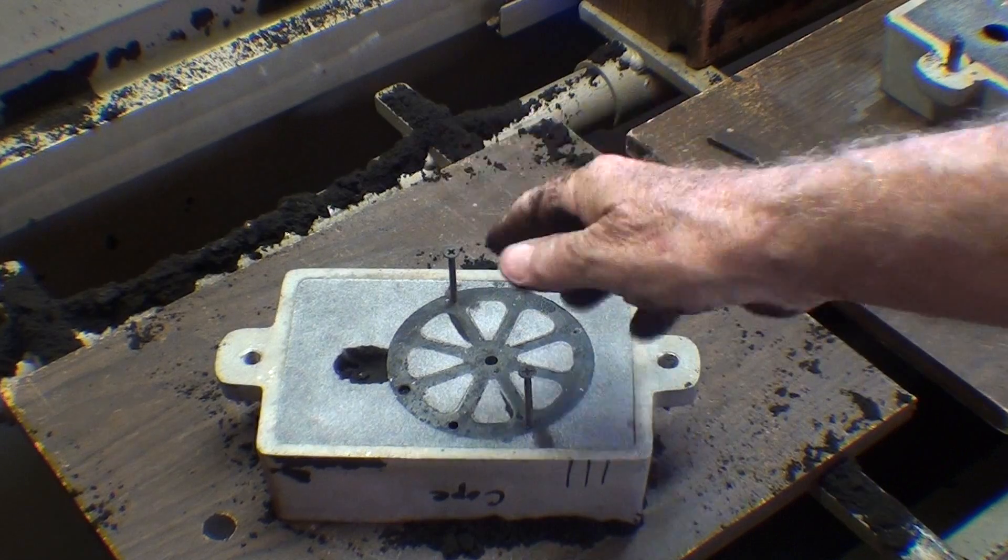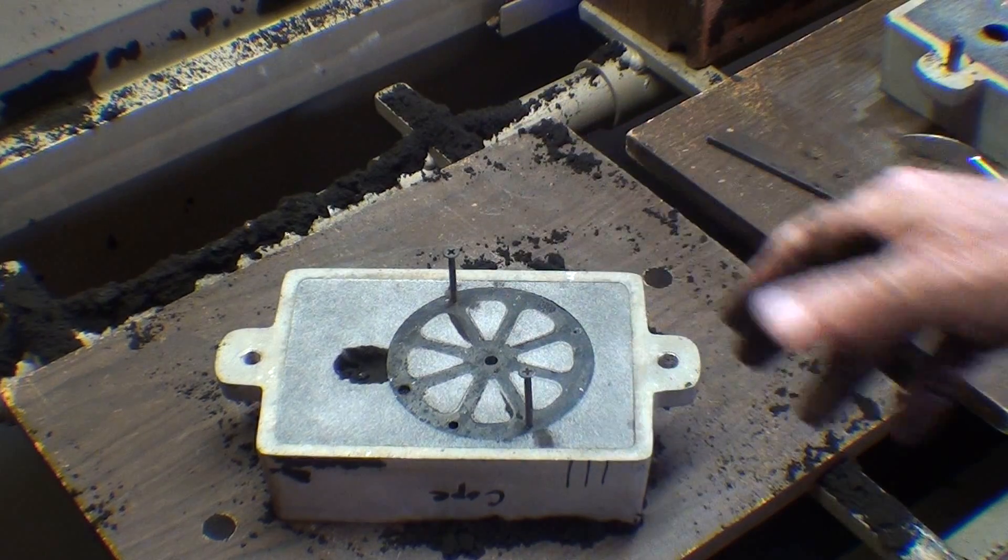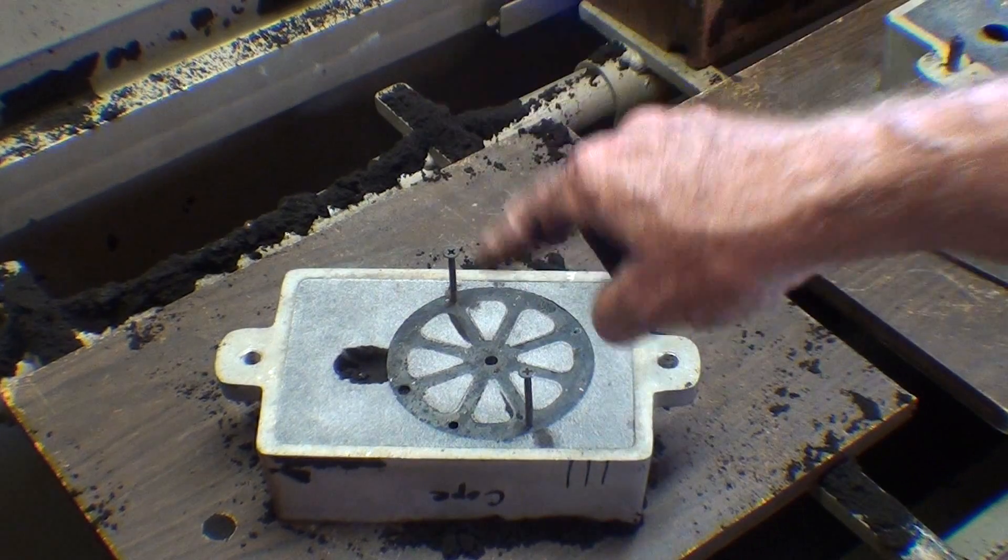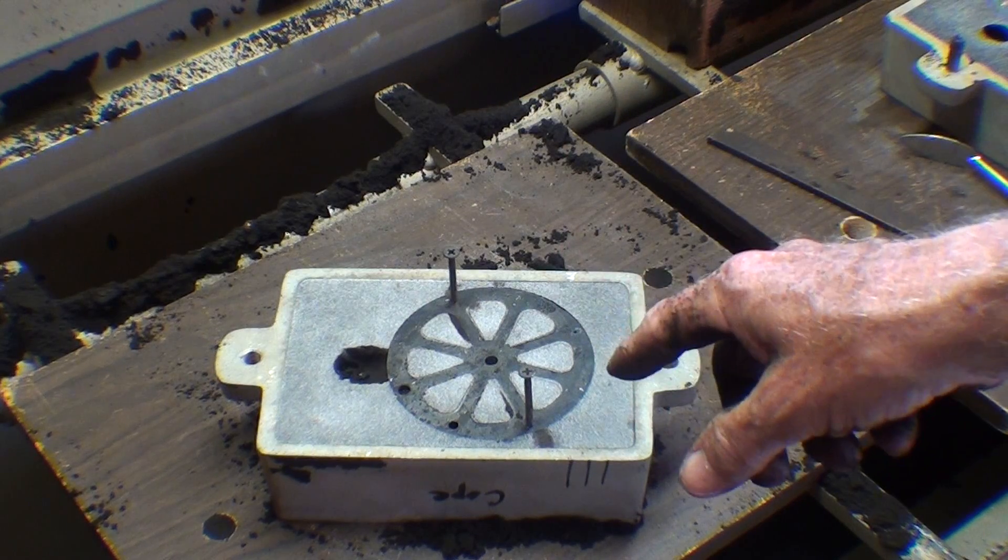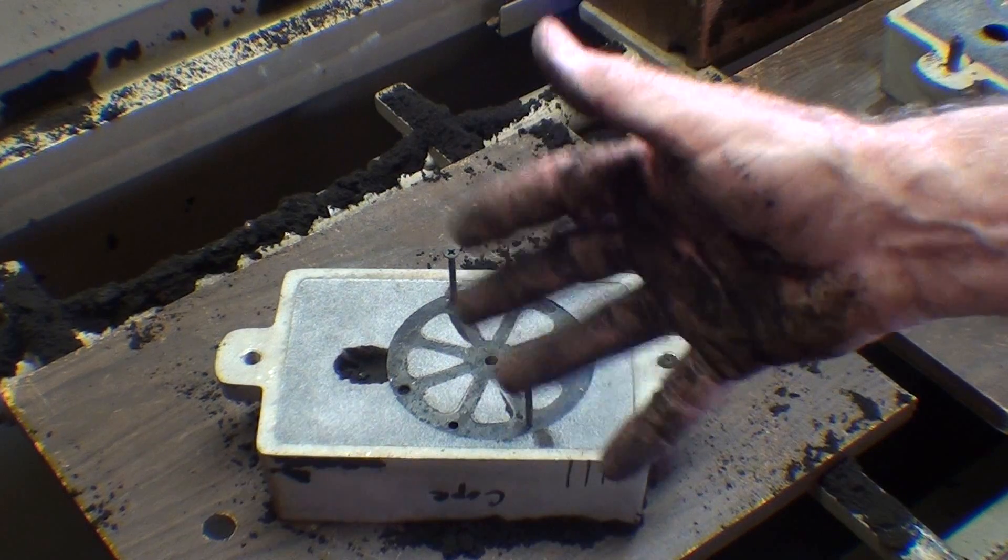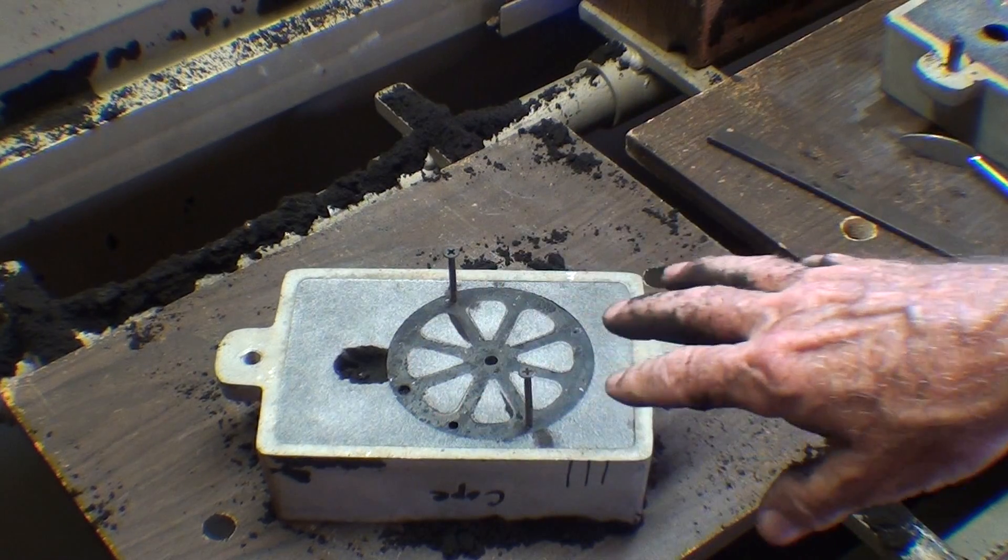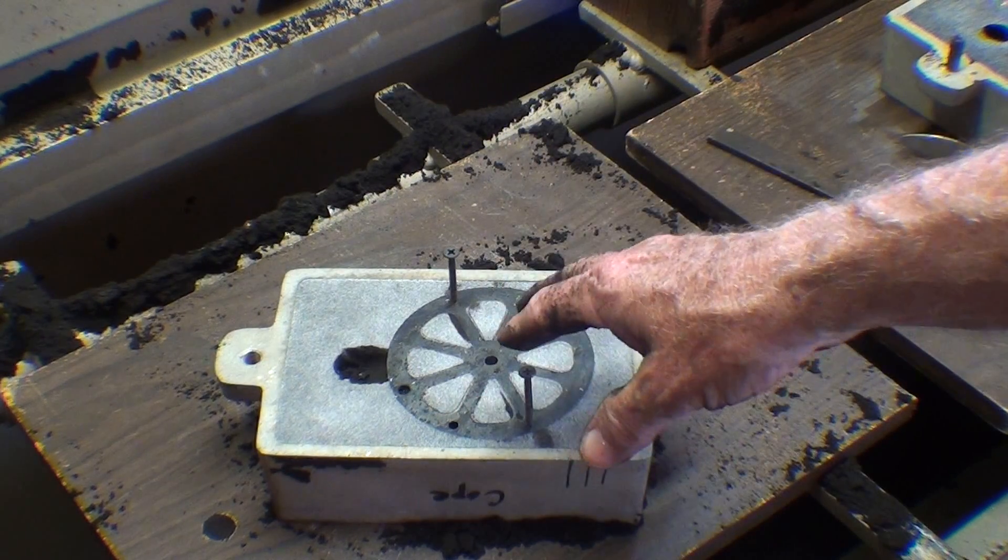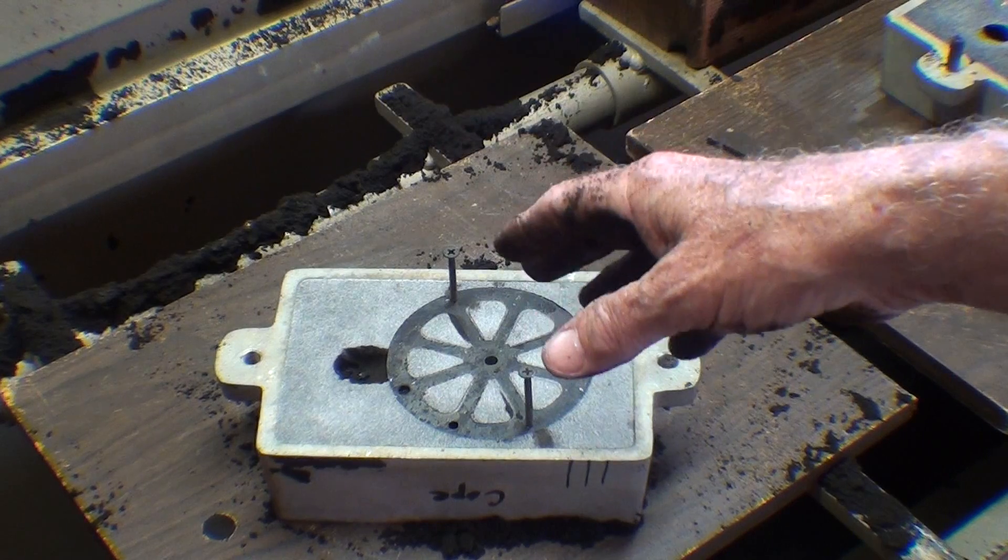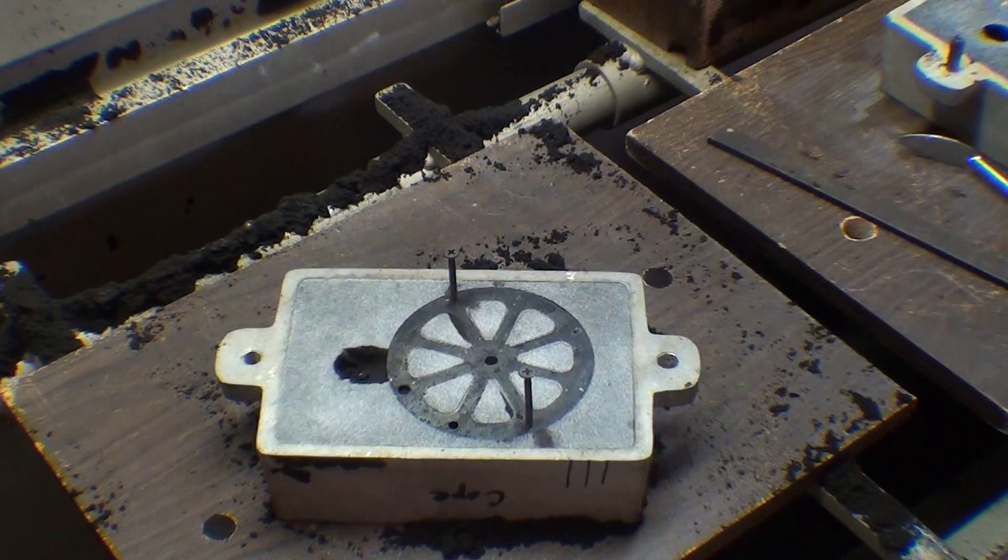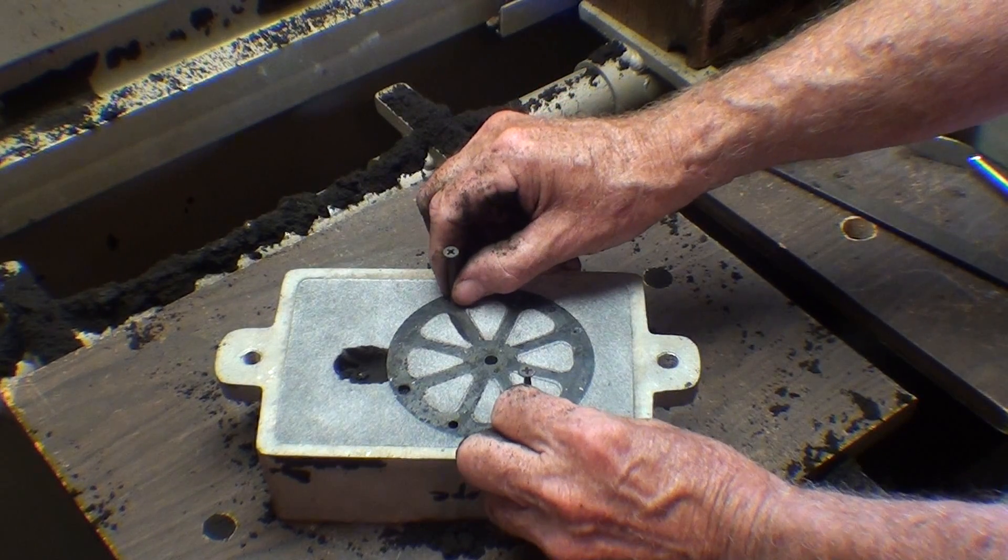Well I've tapped on it, twisted it, cajoled it, and so on. I do not believe that pattern is going to pull cleanly out. And if it just causes the sand to fall in, then I'm not even going to pour this one. So I just believe there's too much roughness or a lack of draft or some undercuts. But let's see what happens. I'm going to quit talking about it and do it.